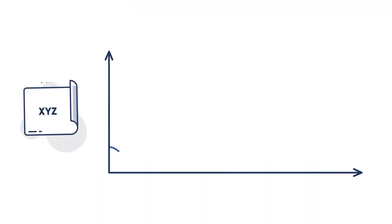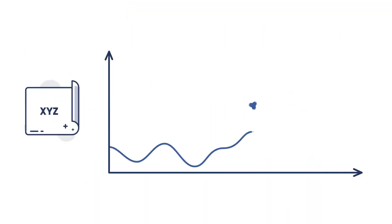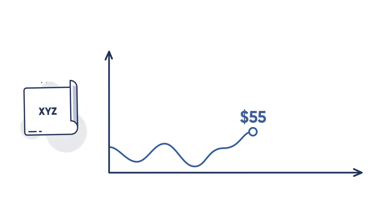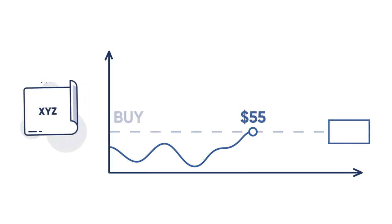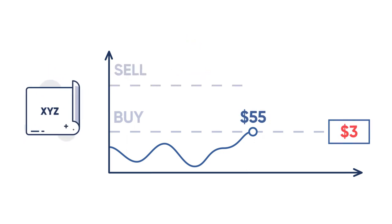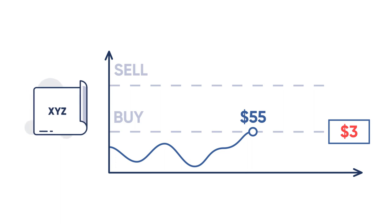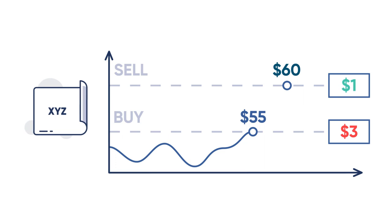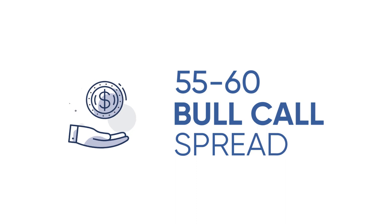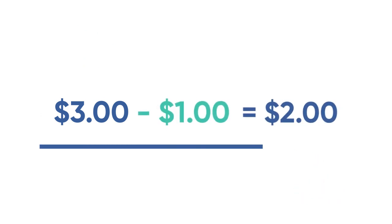Let's say you're bullish on XYZ stock, which is currently trading for $55 per share. To create a bull call spread, you buy the 55 strike call, currently trading for $3, then sell a call with a higher strike price — like the 60 strike call — which is currently trading for $1. You now own the 55-60 bull call spread, and the amount that you paid for the trade is the difference between the $3 debit for the 55 call and the $1 credit from the sale of the 60 call, which is $2.